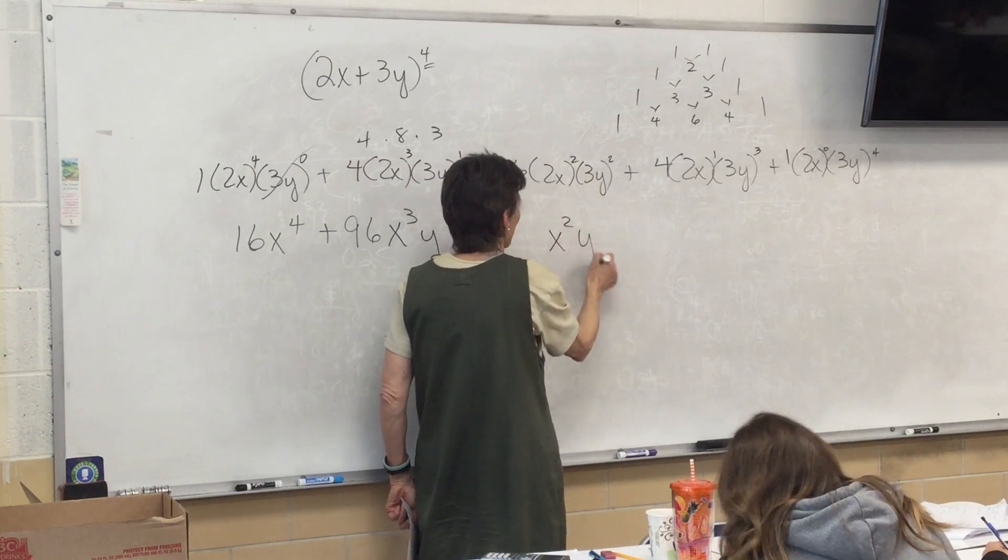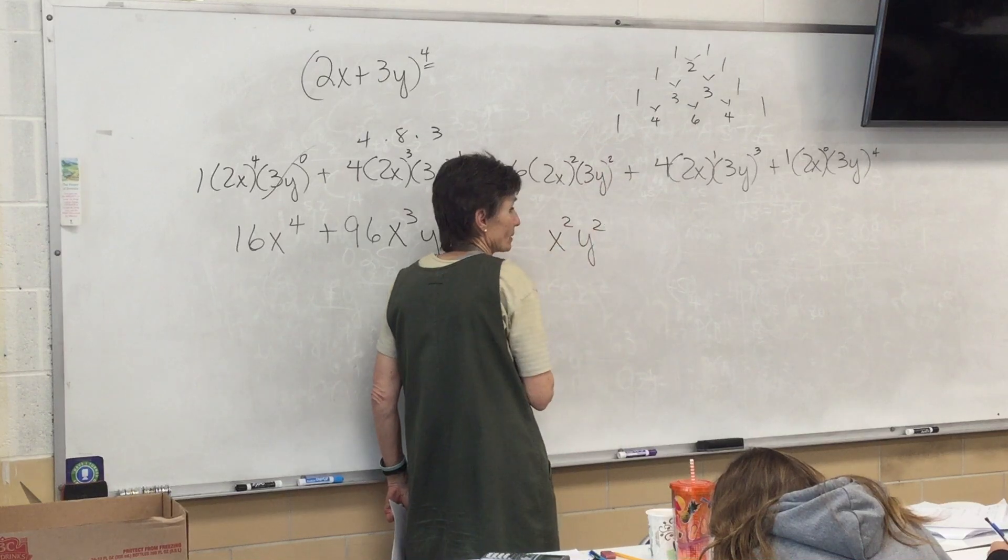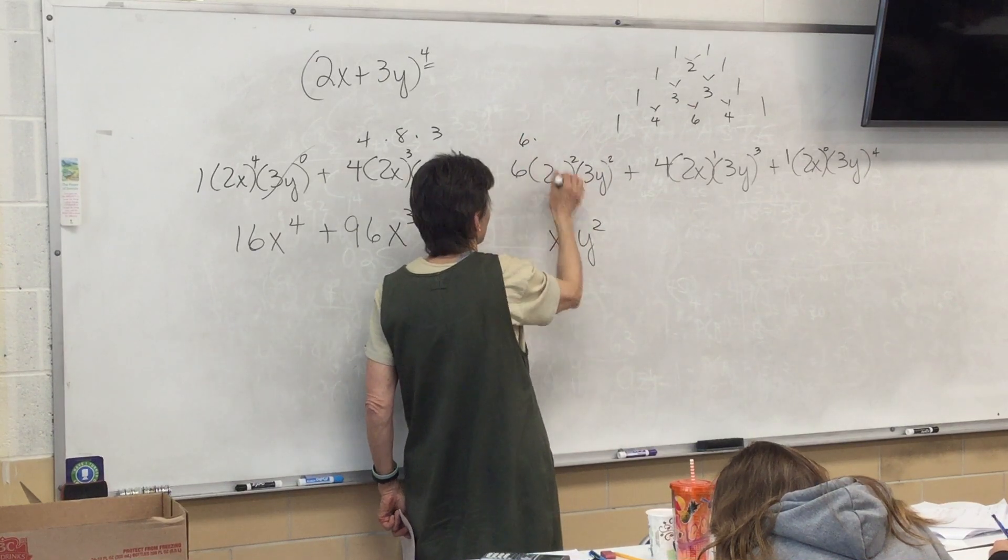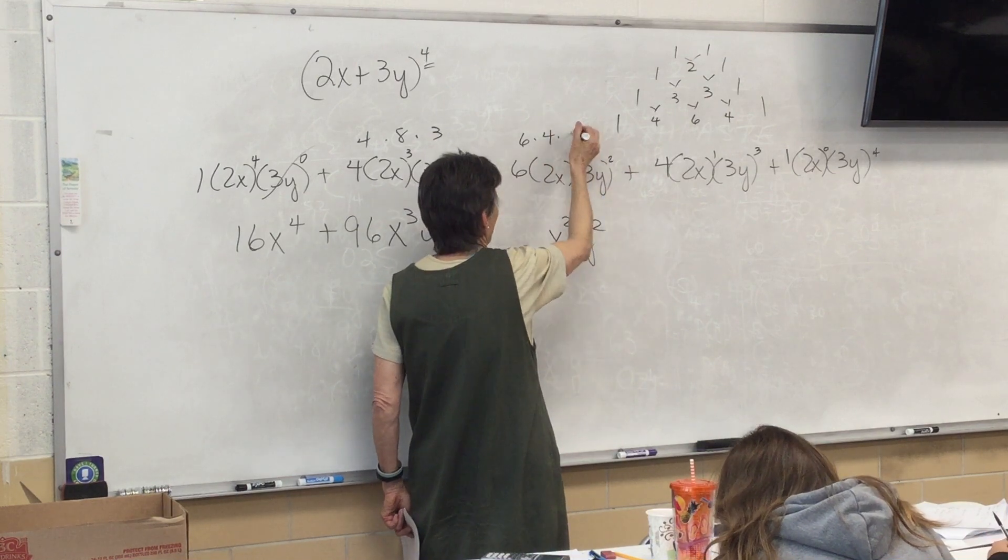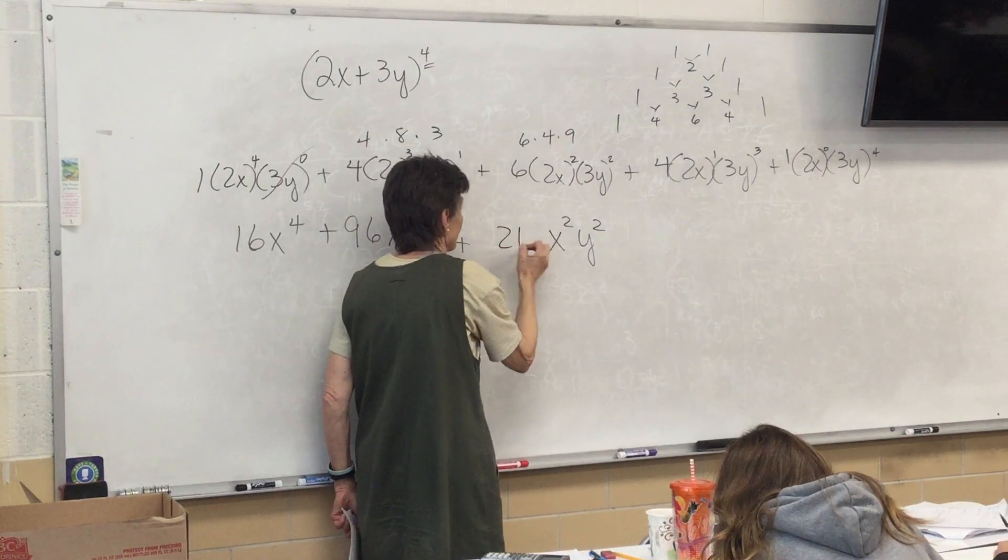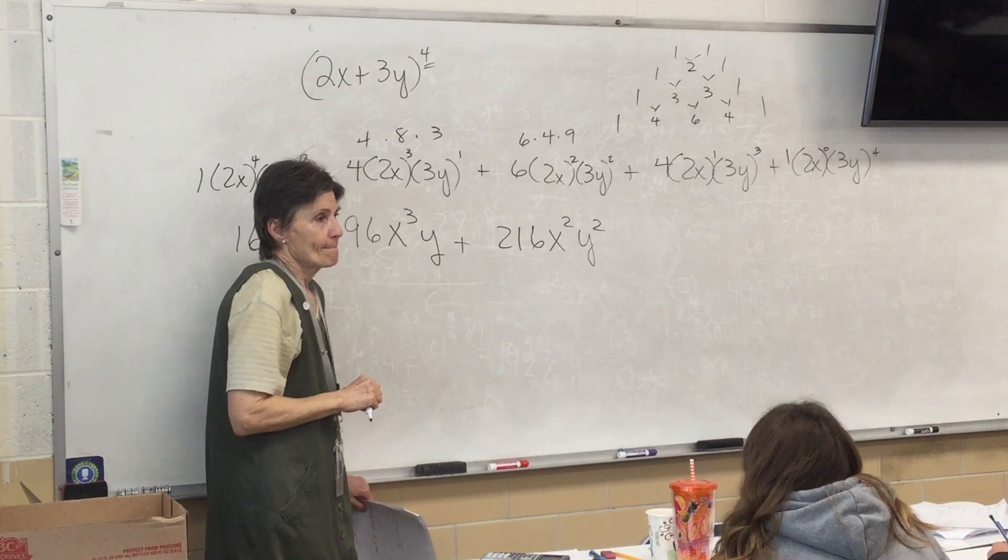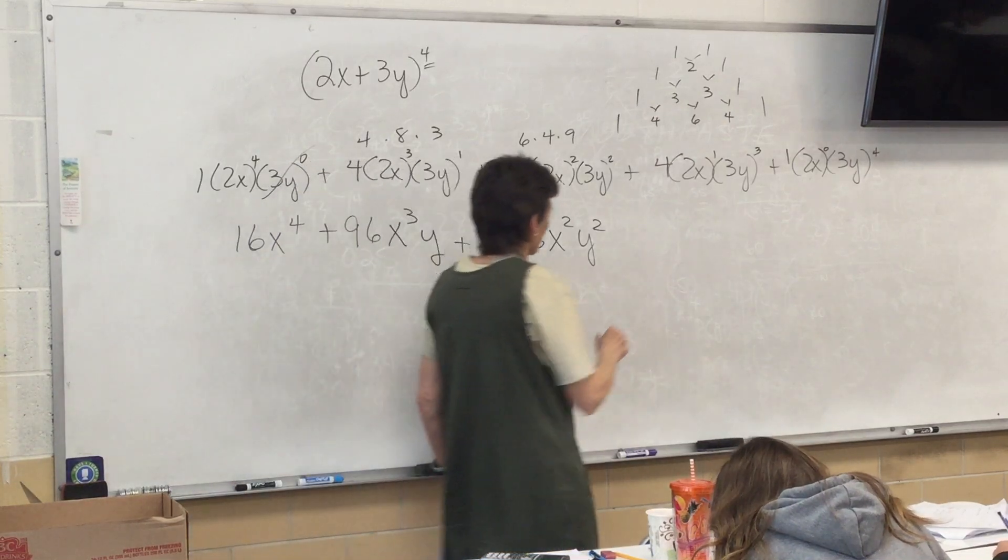All right. I know my next one is going to be x squared y squared. I can see that right here. But what are my numbers? 6, 4, 9. 216. You guys with the calculators double check me. 216.